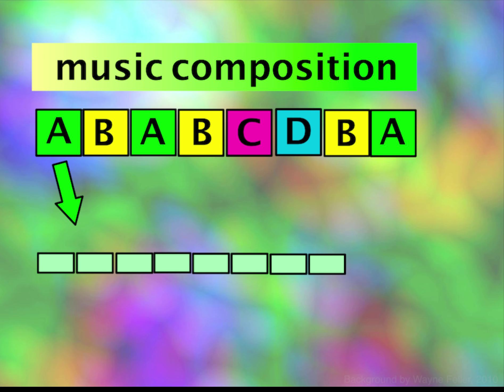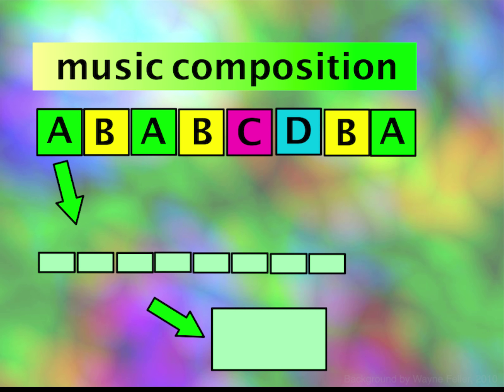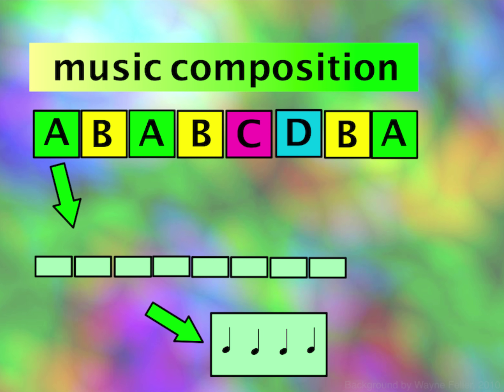Each phrase is made up of a number of measures. There are often eight measures in a phrase. And each measure contains a number of beats. For our project, we will use four beats in each measure.